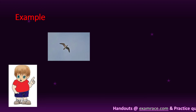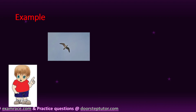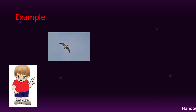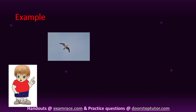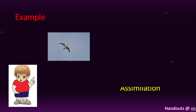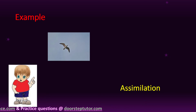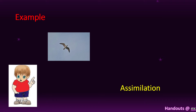For example, a boy first stores in his schema that a bird looks like this. So the first time he sees a bird flying in the sky, he says 'this is a bird.' By taking information from his existing schema, he identifies it correctly. This is called assimilation — when you see a new thing, you compare it with your existing schema and apply what you already know.